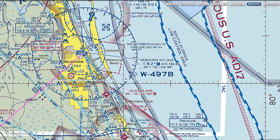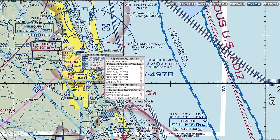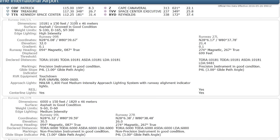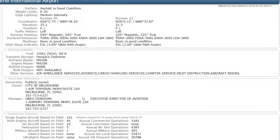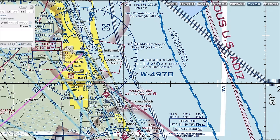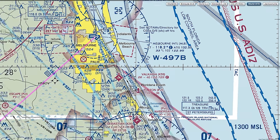The FBO frequency is 122.95. While paper AFDs are becoming a thing of the past, many pilots now use iPads or Android tablets with apps like Garmin Pilot or ForeFlight. With those apps you can simply tap on Melbourne and instantly see all frequencies, runway details — 9 right, 27 left, 9 left, 27 right — distances, widths, and other information. If the tablet has Wi-Fi or data, you can even check fuel prices.